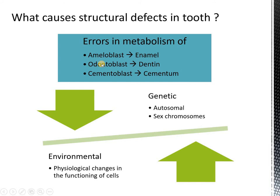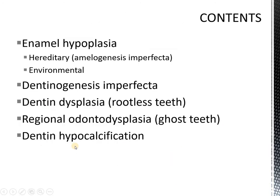Ameloblast is ectodermal in origin. Odontoblast is ectomesenchymal in origin, that is neural crest in origin. Ameloblasts are influenced by anything that affects epithelial growth and development. Let us have a look at the changes occurring in enamel, which we call enamel hypoplasia. In the first part, we will talk about the hereditary, that is amelogenesis imperfecta, and the environmental causes of enamel hypoplasia. In the next part of the lecture, we will talk about the dentine changes.